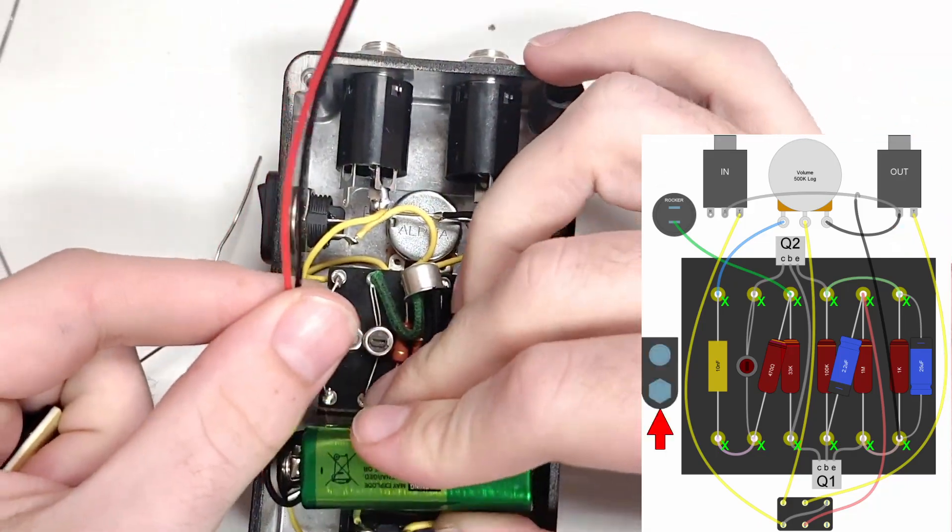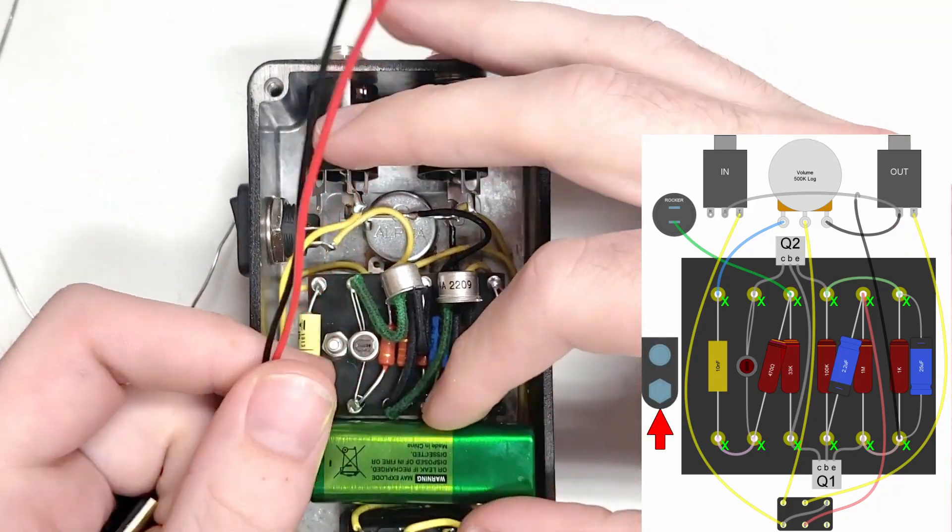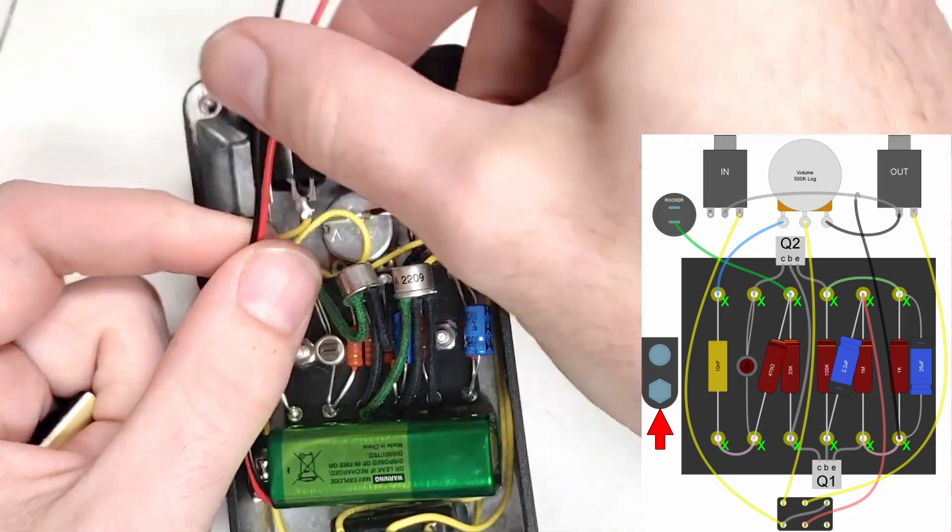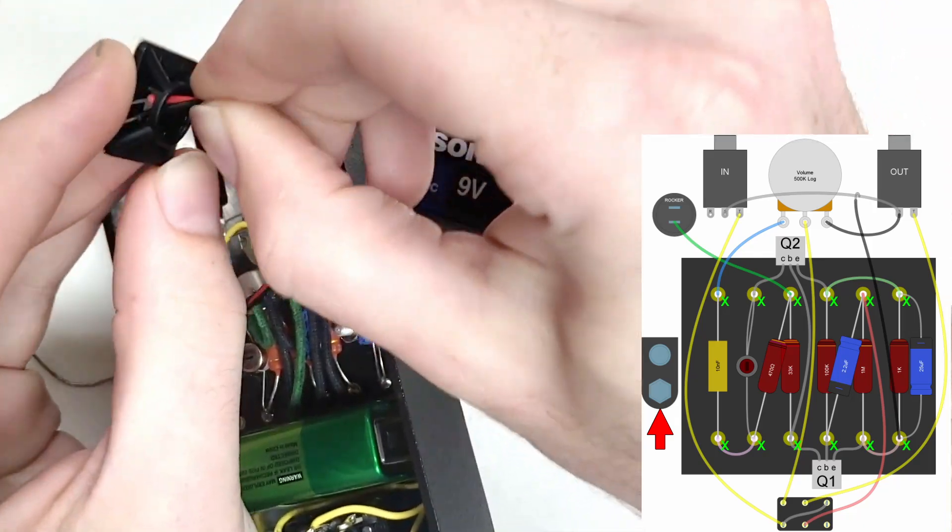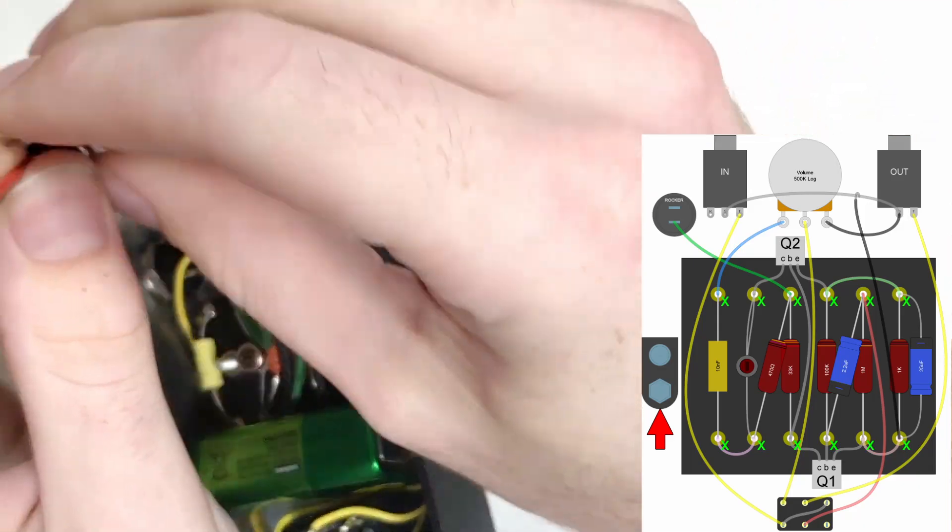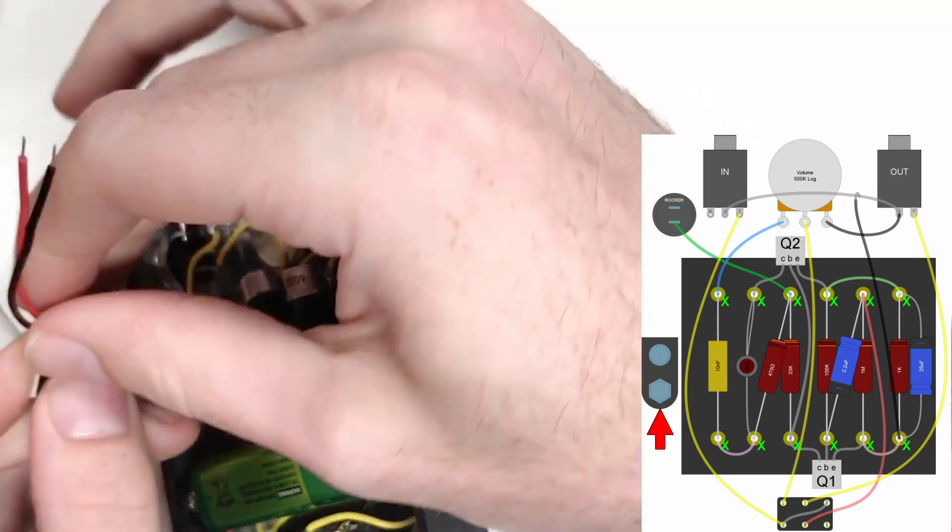To install the battery contacts, we first connect them to an actual 9 volt battery so that we can get an idea of how it will sit in the pedal. We are also using an adhesive mount strain relief so that if the battery falls out, the wires tug on the strain relief rather than the solder connections.